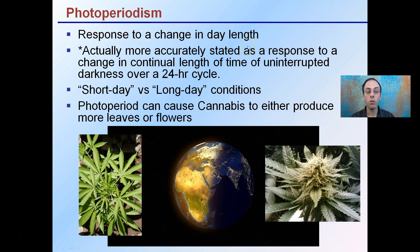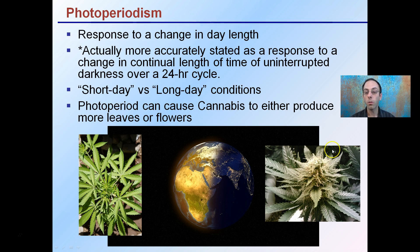Photoperiodism is a response to a change in day length, though more accurately described as a response to the change in the continual length of night — the time of uninterrupted darkness over a 24-hour cycle. You may have heard of plants requiring short-day or long-day conditions, either in summer or winter, based on the tilt of the earth. Photoperiodism is very important for cannabis because it can signal the plant to either produce more leaves and stay in a vegetative state, or produce flowers during the flowering period. Some cannabis plants will change their habits or morphology depending on the hours of light given.